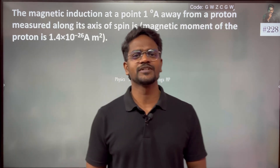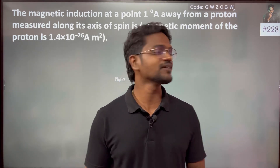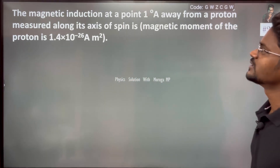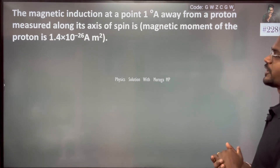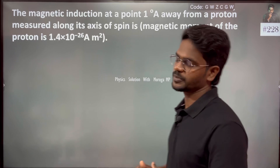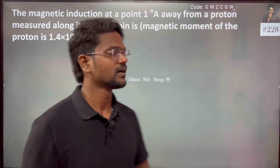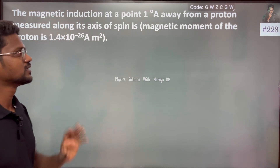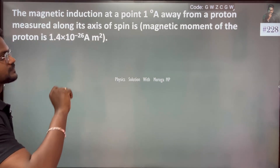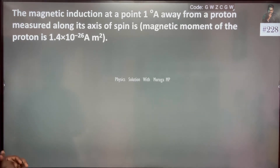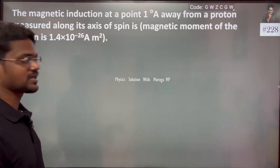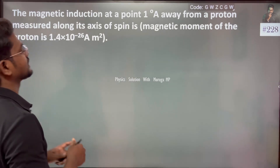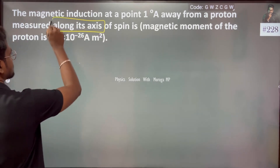Hi everyone. In this problem, we need to find the magnetic induction at a point one Angstrom away — one Angstrom is 10 to the power minus 10 meters — from a proton, measured along its axis of spin. The magnetic moment of the proton given to us is 1.4 × 10 to the power minus 26.